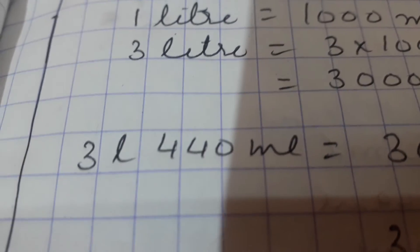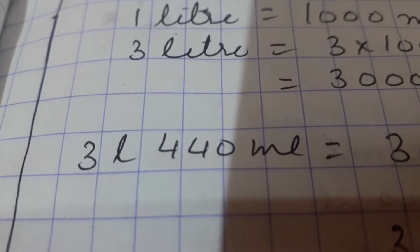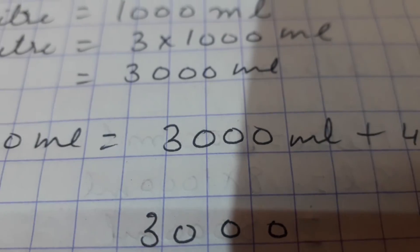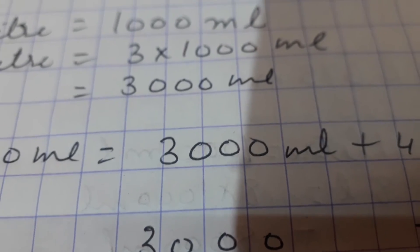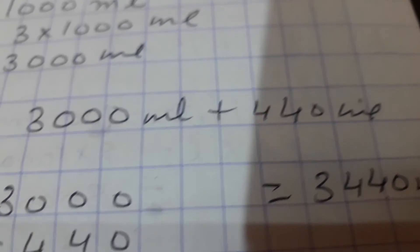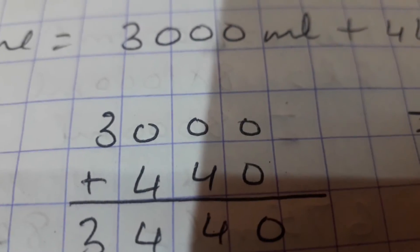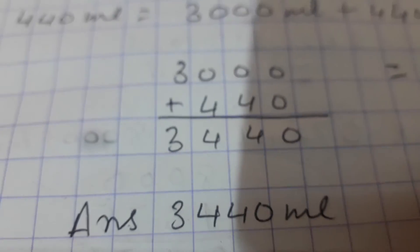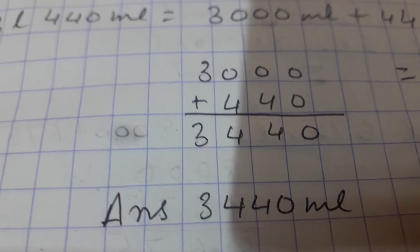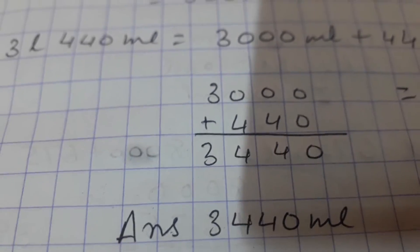The question is three liters, four hundred and forty milliliters. So we will add: instead of three liters, we write three thousand milliliters, and we add four hundred and forty milliliters to it. And what we get is three thousand four hundred and forty milliliters.